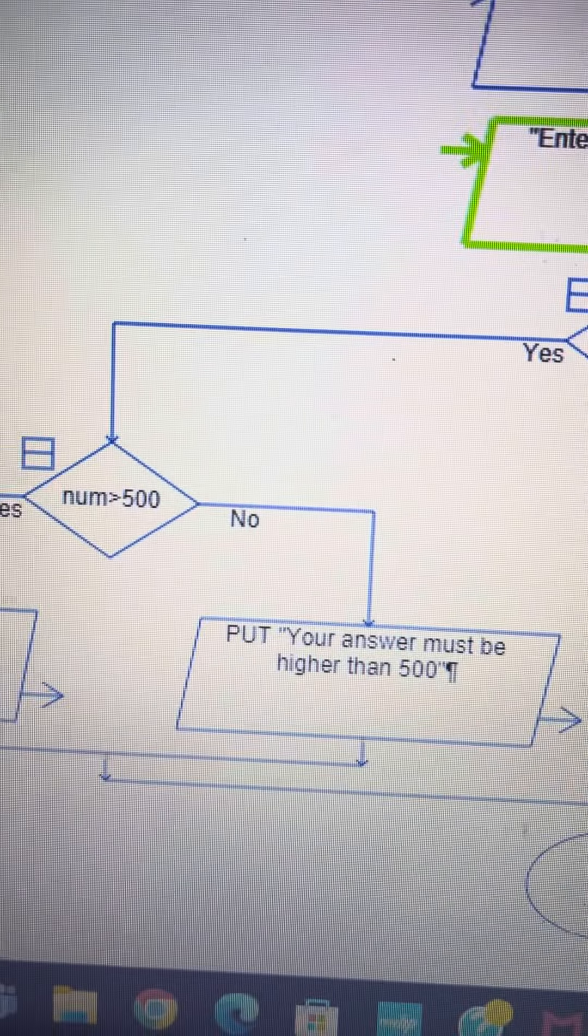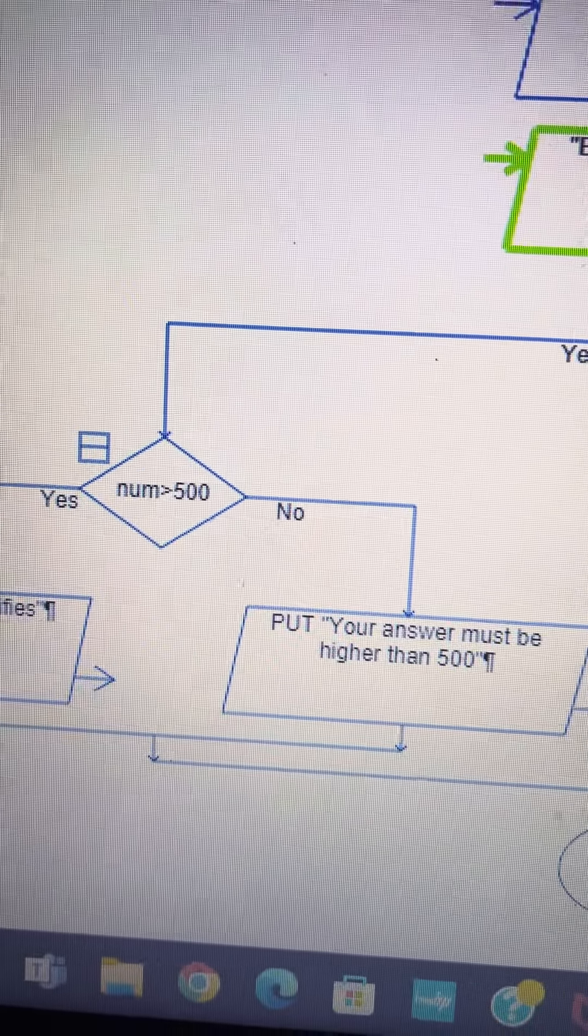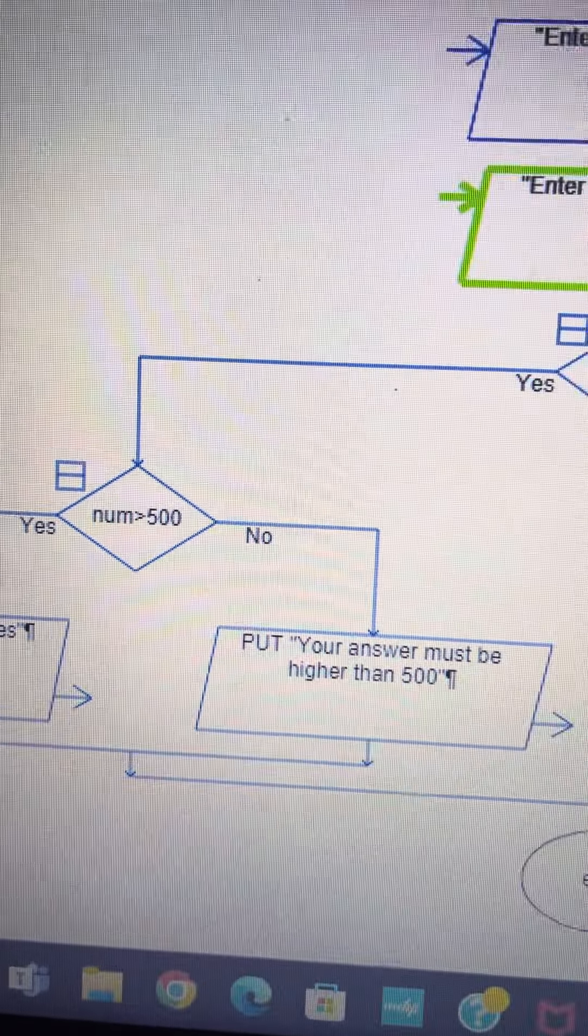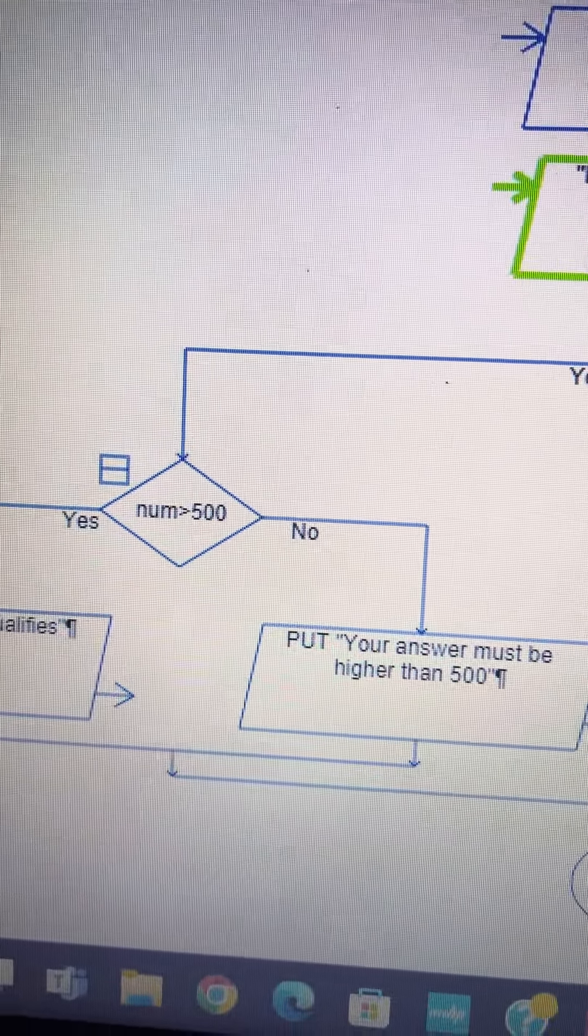And if it doesn't, the answer must be higher than 500. It has to be greater than 500, so that way it's not a weird number.